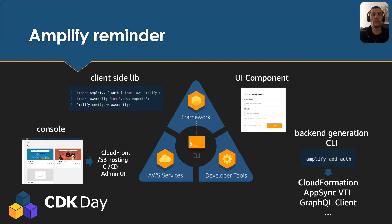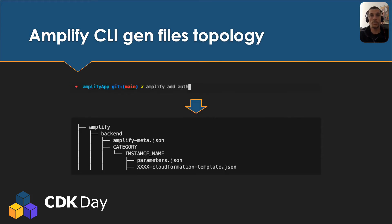We're going to focus here on this backend generation command line. When you run 'amplify add category auth', the Amplify command line will generate the following structure: under the Amplify backend folder, you will find a folder for each category and a subfolder for each instance of it.